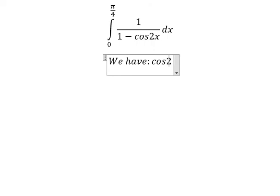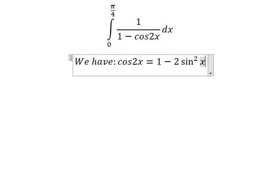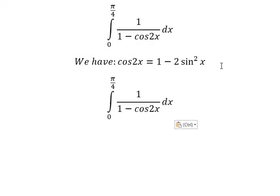We have cos(2x) = 1 - 2sin²x. This is trigonometric identity. So we put this one to replace for this one.